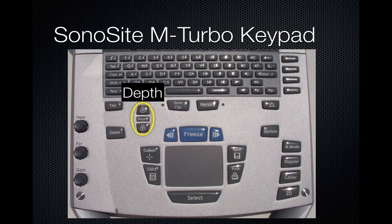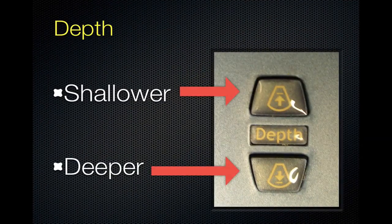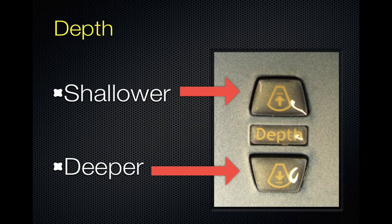Several sets of keys on the Sonosite M-Turbo keypad allow you to optimize your image by adjusting things such as depth and gain. Depth buttons are located here. It is important to center your object of interest in the middle of your screen. If you need the screen field to be shallower, use the top depth button. If you need the field to be deeper, press the bottom depth button as many times as necessary to achieve the depth you need.